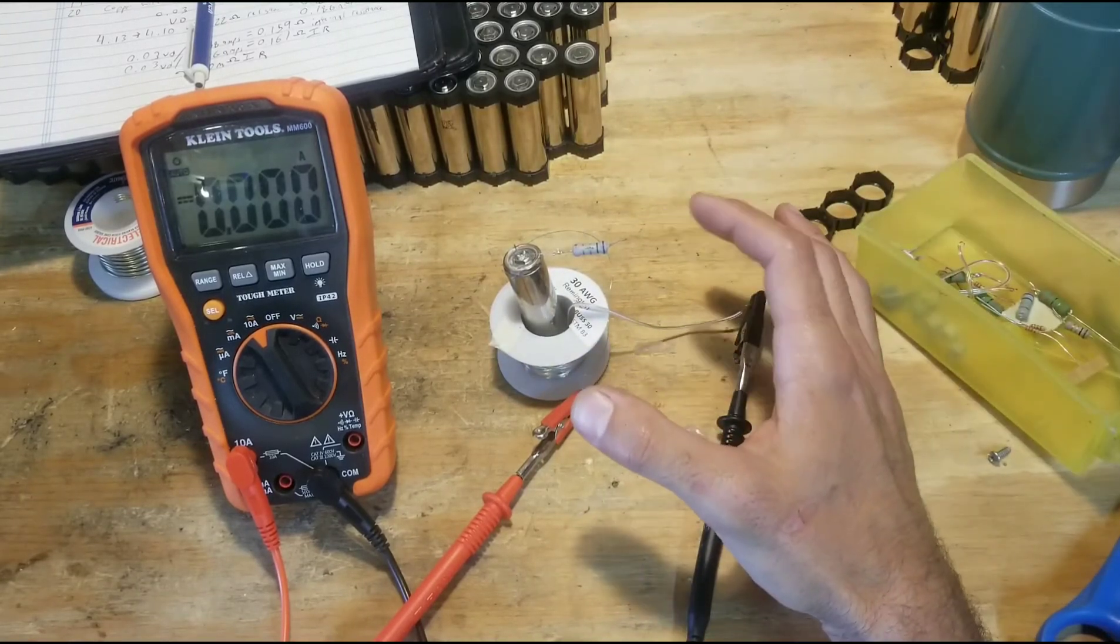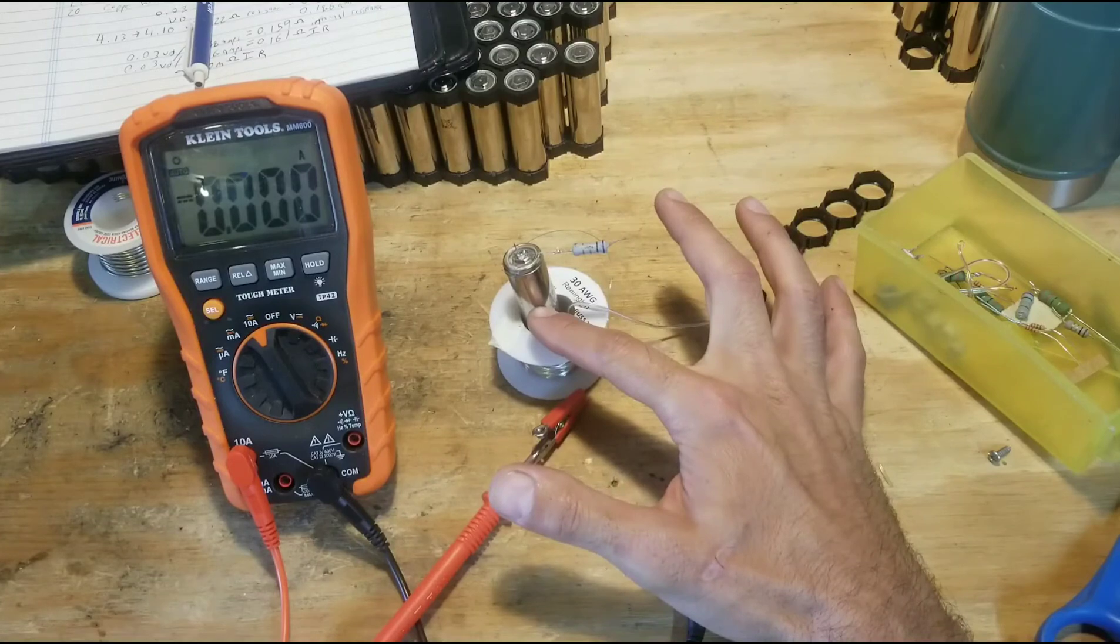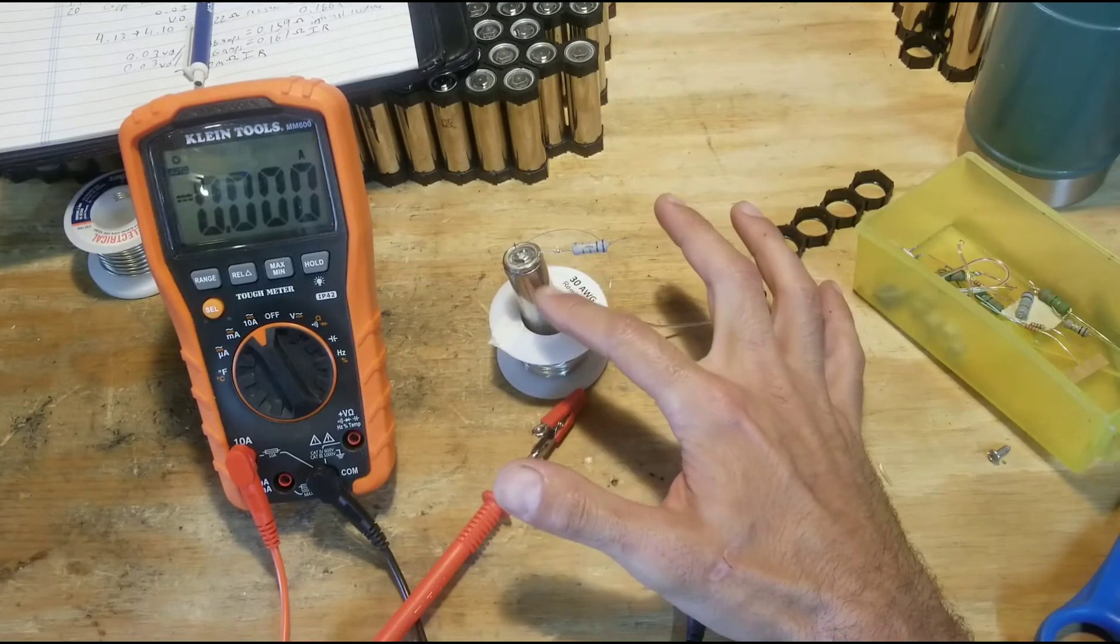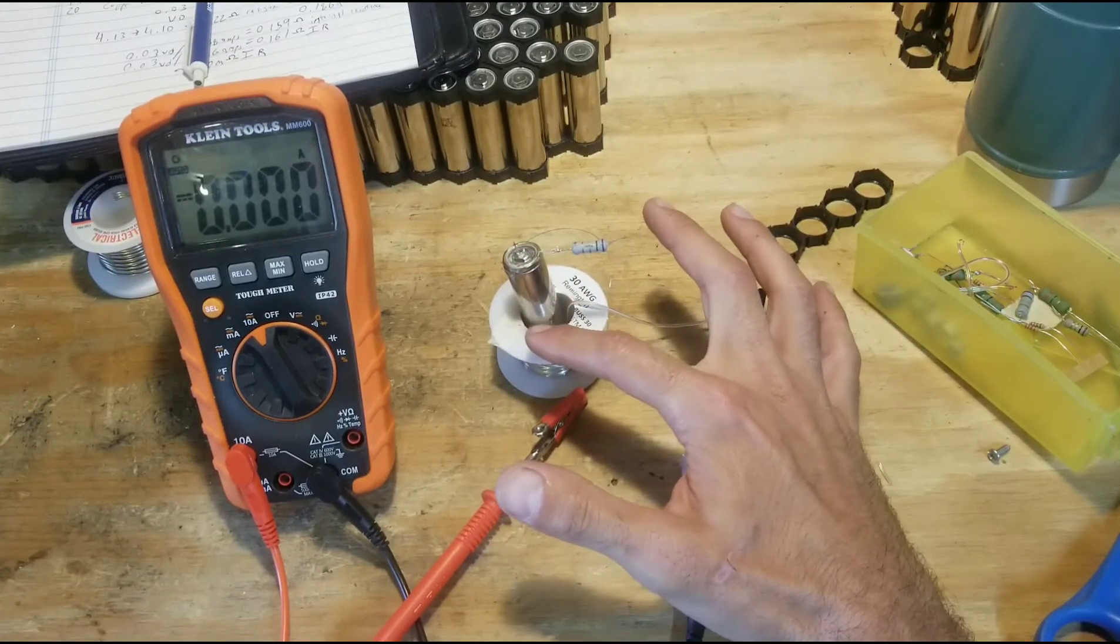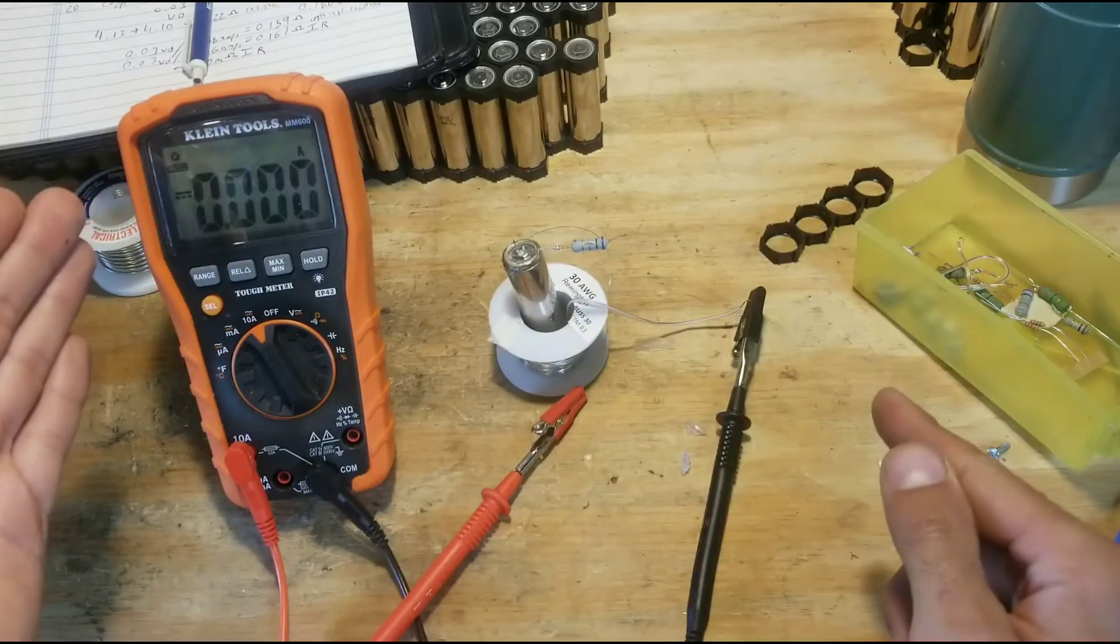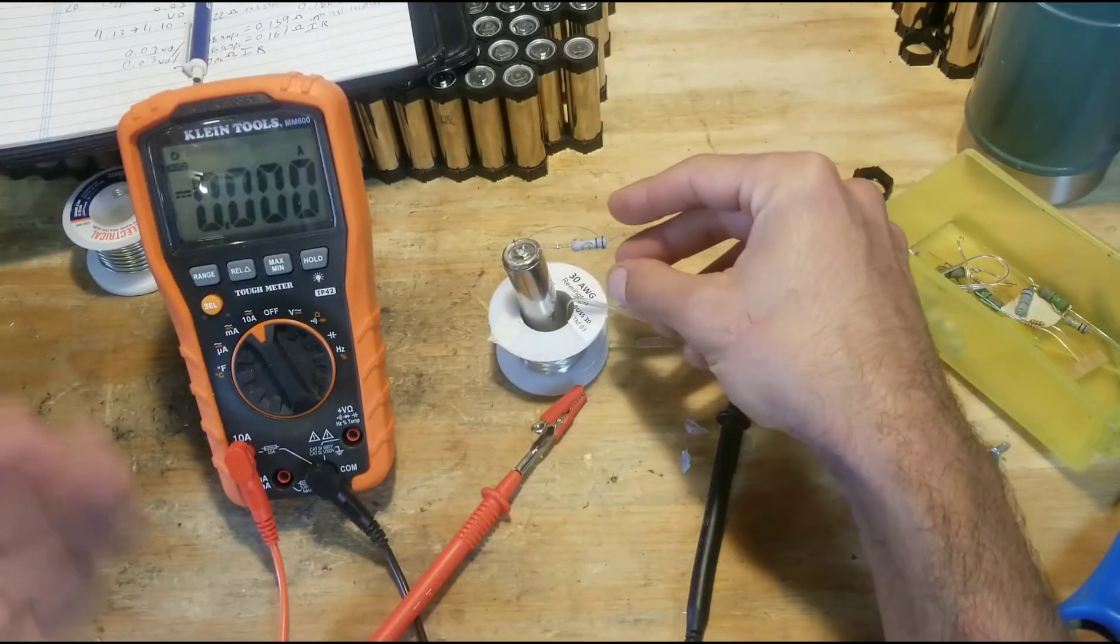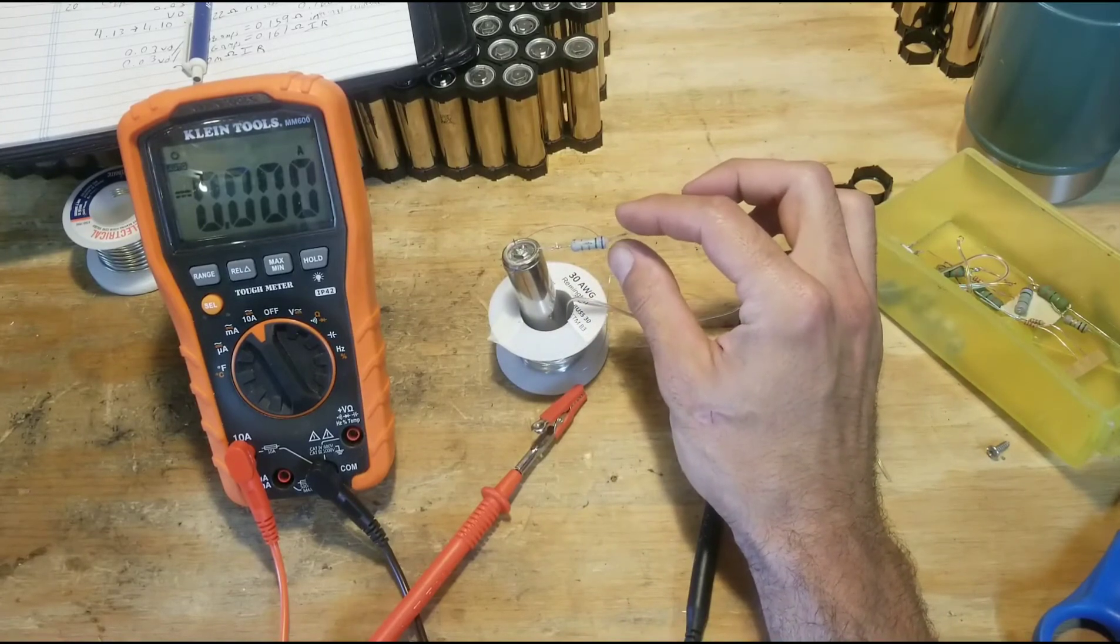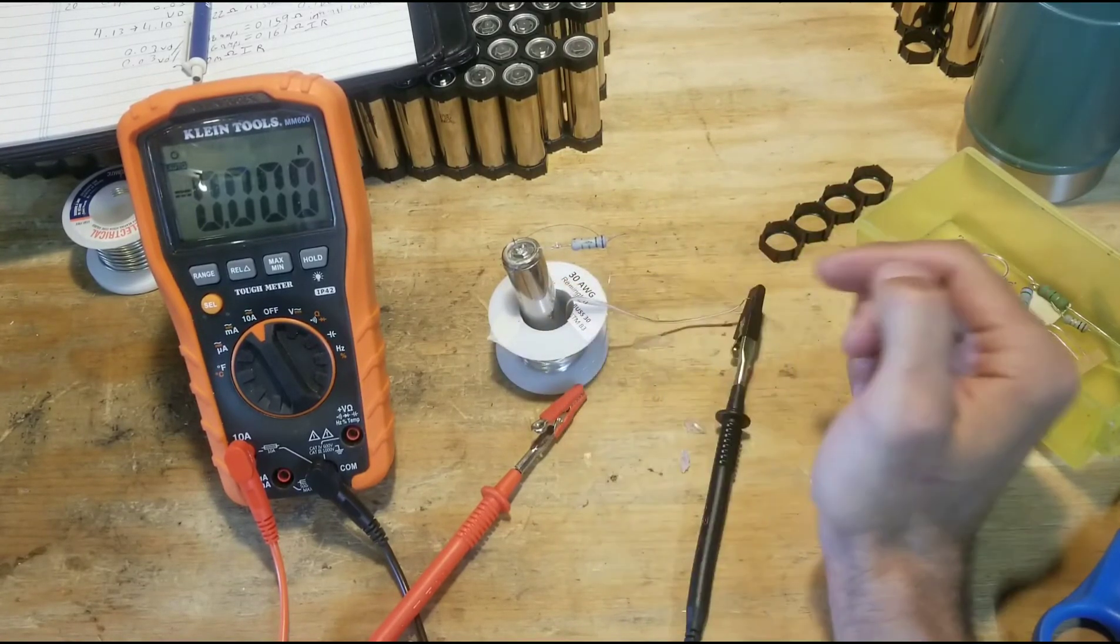So if I want to get 5 amps out of this battery at 4.07 volts, you divide 4.07 by 5 amps, and that tells you the resistance you need to get that amount of amperage. So I've got a 0.8 ohm resistor, which is what you need to get 5 amps from 4 volts.